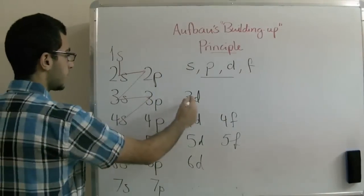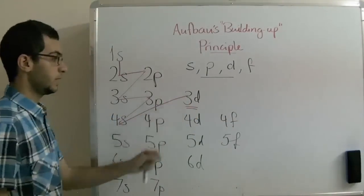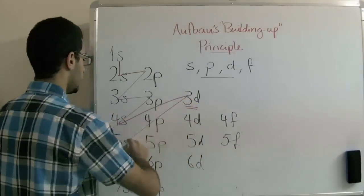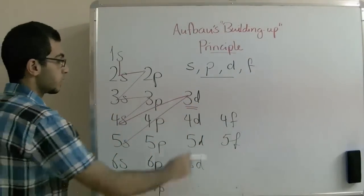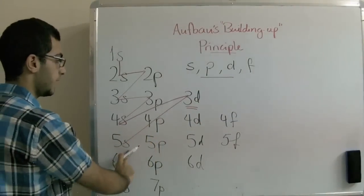We go to the last element. So 4s is less than the 3d. And then we go downwards like that. The 3d is less than the 4p. The 4p is less than the 5s.